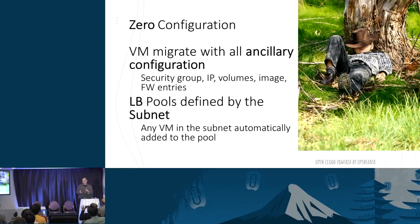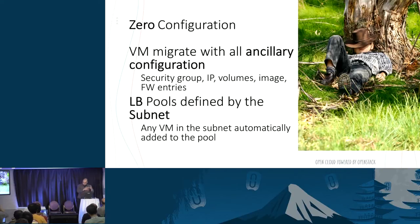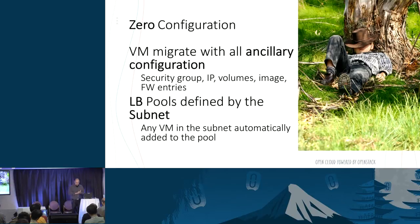Zero configuration: when you're moving a VM today you need to move its image, its volumes, its networks, all its configuration — everything. We're talking about moving the VM along with all its ancillary configuration: the security groups, IP address, volumes, images, firewall entries, and everything.